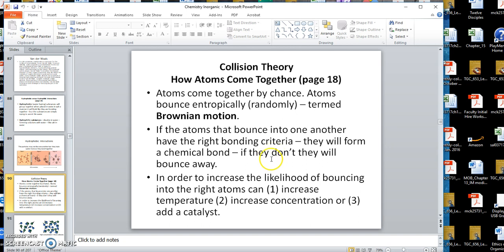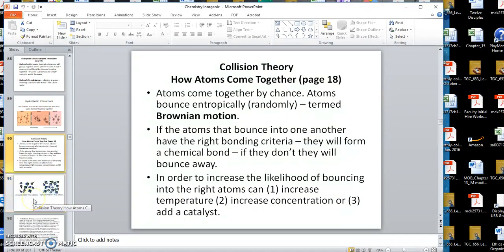Now, how could I increase the chance of the right stuff bouncing in? One is to increase the temperature. So if you increase the temperature, atoms and molecules bounce faster. The other is to increase the concentration of the things that you would like to come together. The third is to add a catalyst.